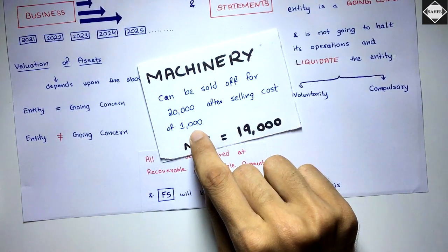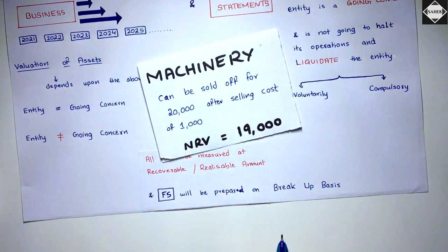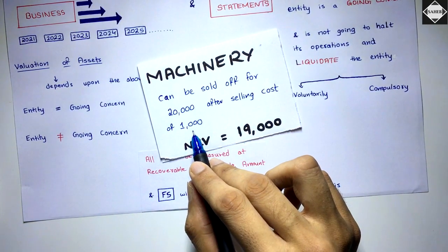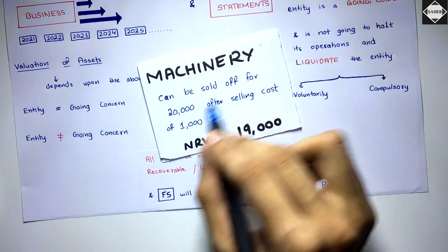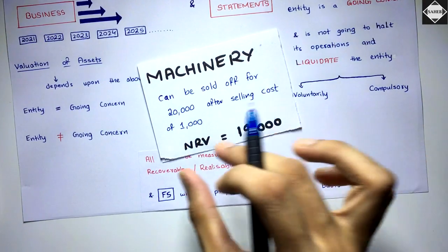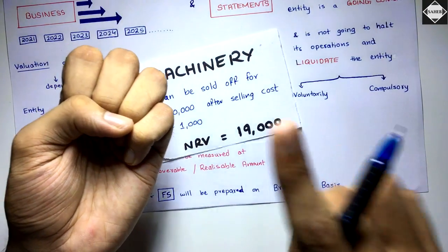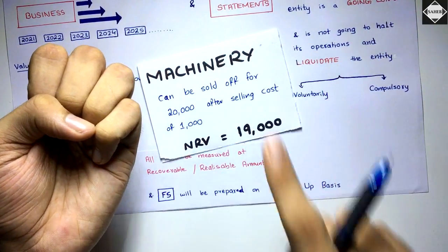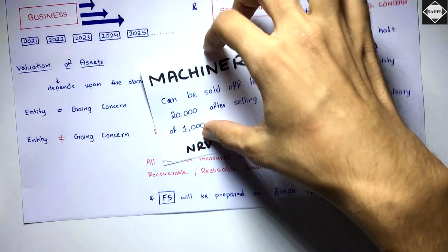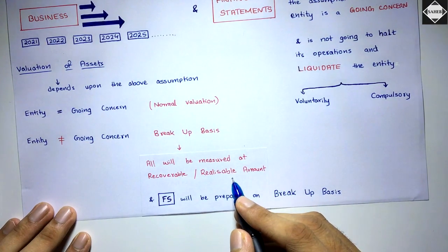After incurring selling costs of 1,000 — for example, dismantling or carrying the machinery — the net realizable value of that machinery would be 19,000. You got 20,000 by selling the machinery, but you incurred 1,000 in selling costs, so 19,000 is the net realizable value. This is how assets are recorded at recoverable and realizable amounts under breakup basis.